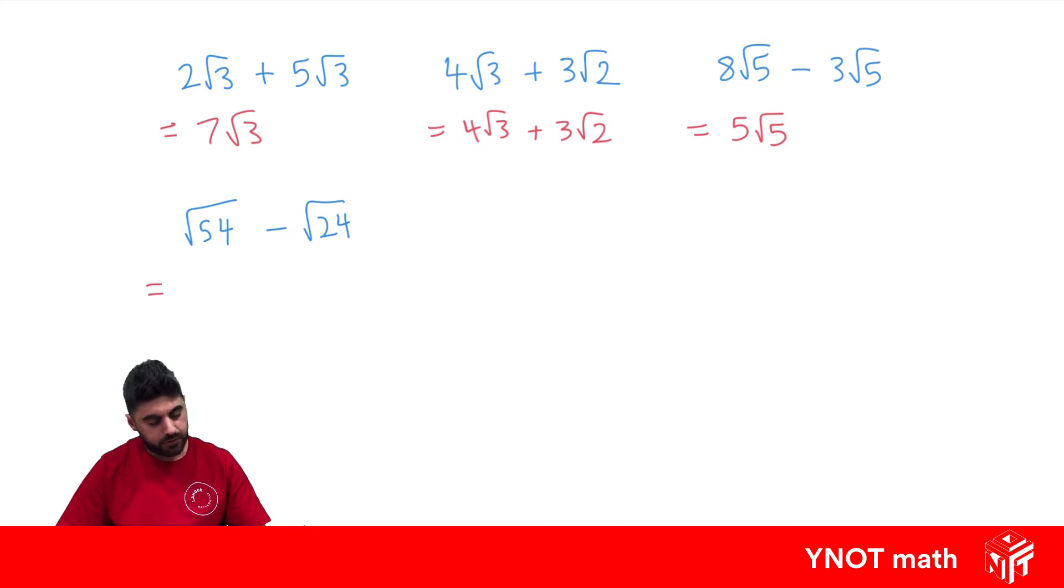Root 54 can be written as root 9 times 6, and root 24 can be written as root 4 times 6. Well, root 9 is 3, so we're going to have 3 root 6. Root 4 is 2, so we're going to have 2 root 6.